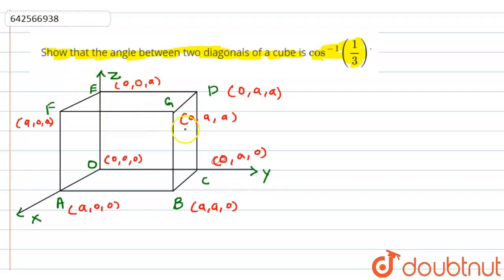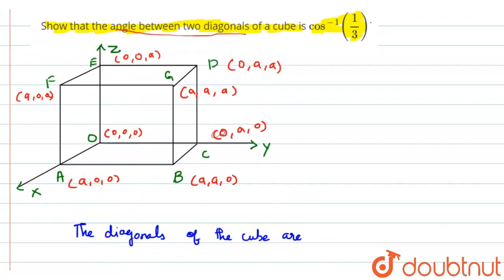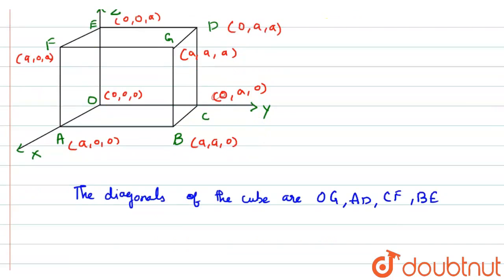So these are the coordinates of the respective vertices of the cube. The four diagonals of the cube are OG, AD, CF, and BE. We will just take two diagonals — let's consider OG and AD.